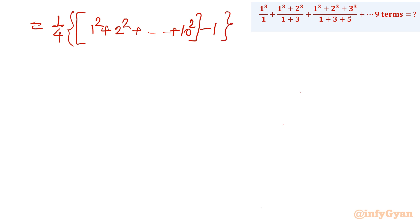Now 1 square for n terms, 1 square plus 2 square up to n square, this summation we know, it is called sigma n square formula. If you will write then it is n times n plus 1 times 2n plus 1 over 6.